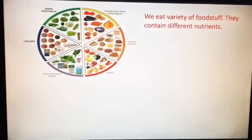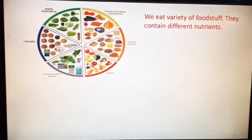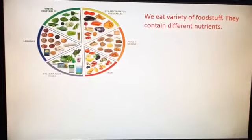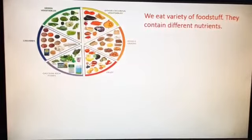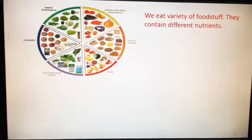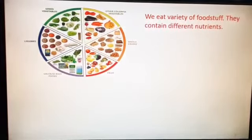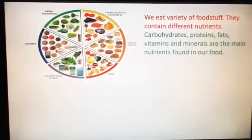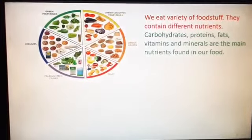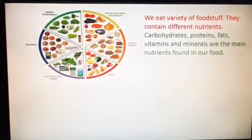This word you already learned in third class. This year you are going to learn about different types of nutrients — only an introductory class. In higher classes you will learn more, but this year you are going to learn about five different nutrients present in our food. They are carbohydrates, proteins, fats, vitamins and minerals.